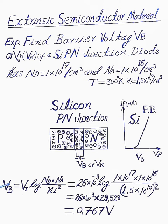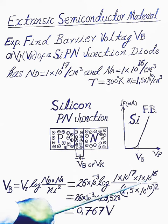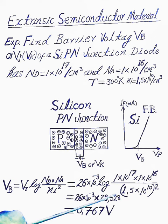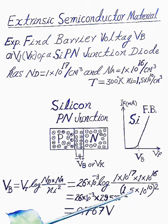For VT, 26 millivolt equal to 26 multiplied by 10 raised to power minus 3, log 10 raised to power 17 multiplied by 10 raised to power 16 divided by, under the bracket, 1.5 multiplied by 10 raised to power 10 whole square, equal to 0.767 volts. Okay, thank you.